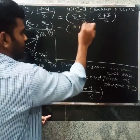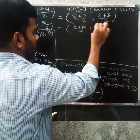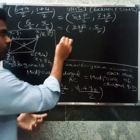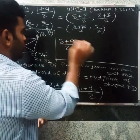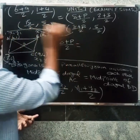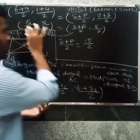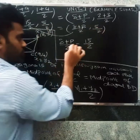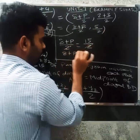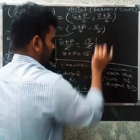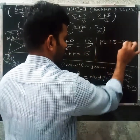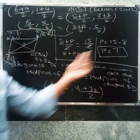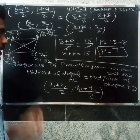So 15 by 2 equals 8 plus p by 2. Setting 8 plus p by 2 equal to 15 by 2, we get 8 plus p equals 15, therefore p equals 15 minus 8. So p equals 7.